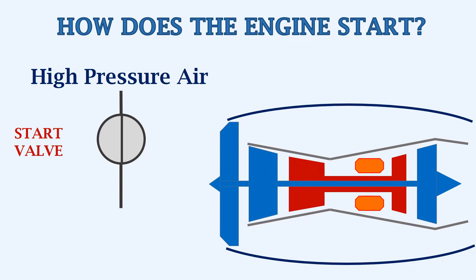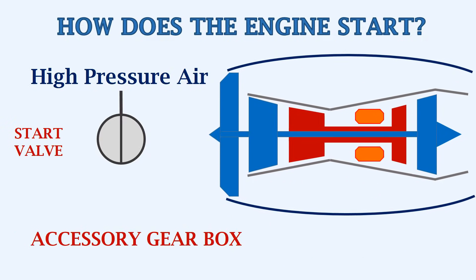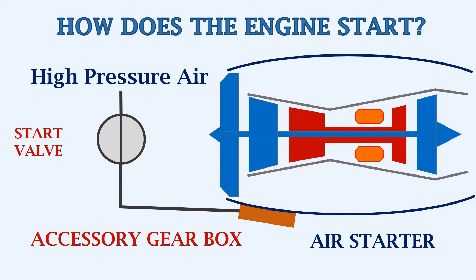After the start valve, the high pressure air is sent to the accessory gearbox, or AGB. This accessory gearbox is usually located near the bottom of the engine, within the engine's cowl. The accessory gearbox houses different pumps and an air starter unit. This unit consists of a turbine which is linked to a shaft. This shaft from the air starter unit is connected to the N2 shaft, or the high pressure shaft.